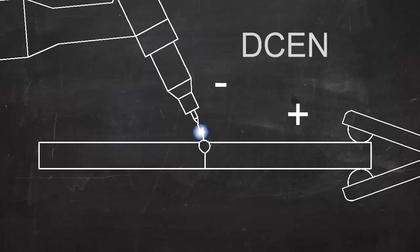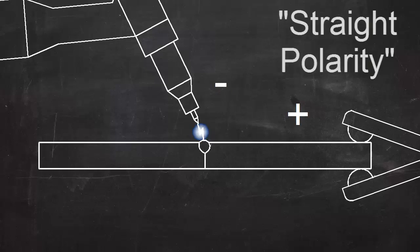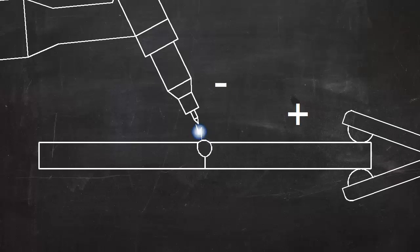The term DCEN is used for this, indicating that the current is DC, and the electrode is negative. This is also called straight polarity, but DCEN is a more descriptive term. DCEN puts most of the heat on the workpiece, and it's the most common setup.